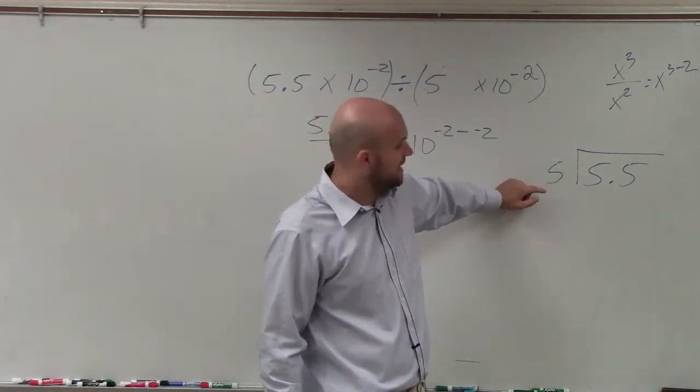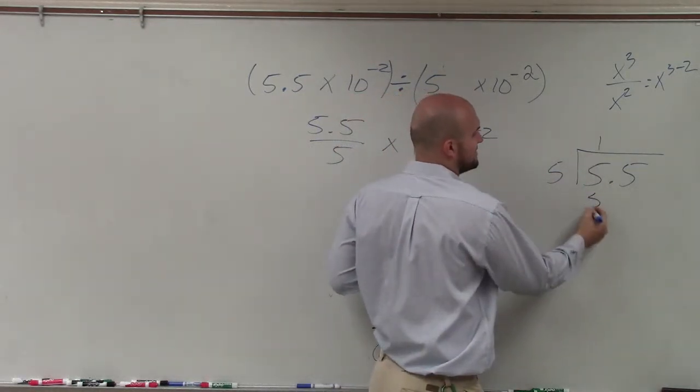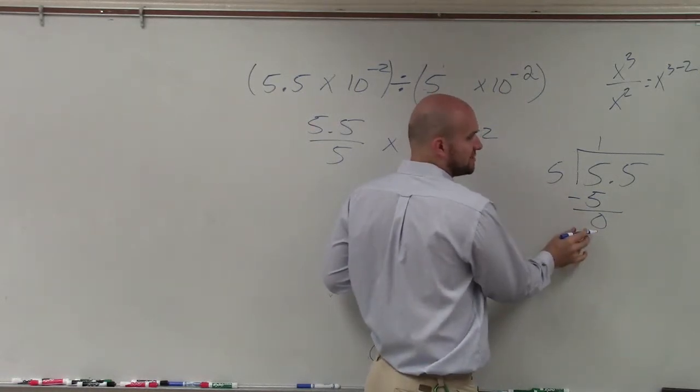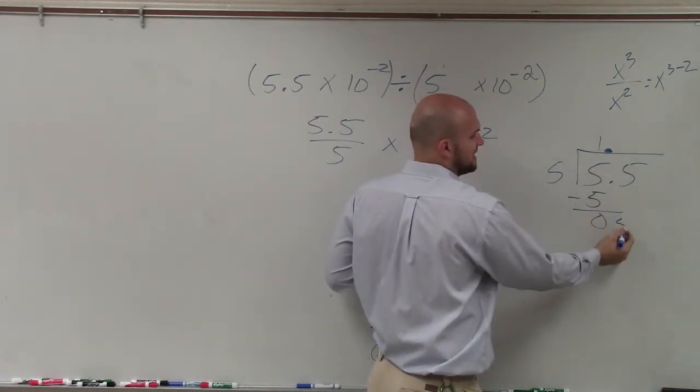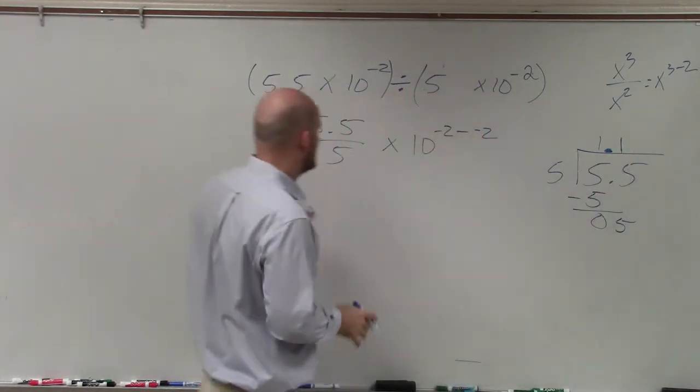So in this case, we have 5 divides into 5 one time. 1 times 5 is 5. Subtract them, 0. 5 does not go into 0, though. So we need to put in the decimal point. Bring down the next number. 5 does go into 5 one time. So therefore,